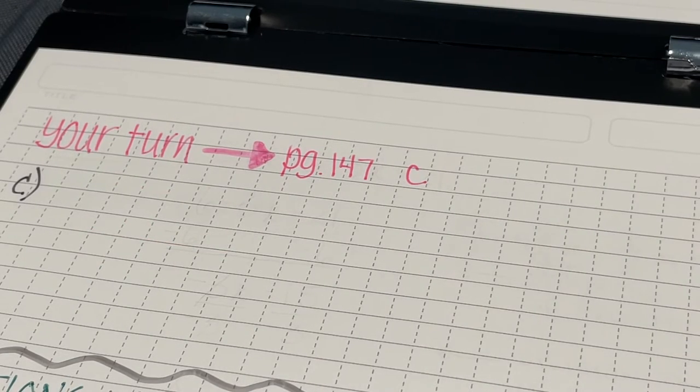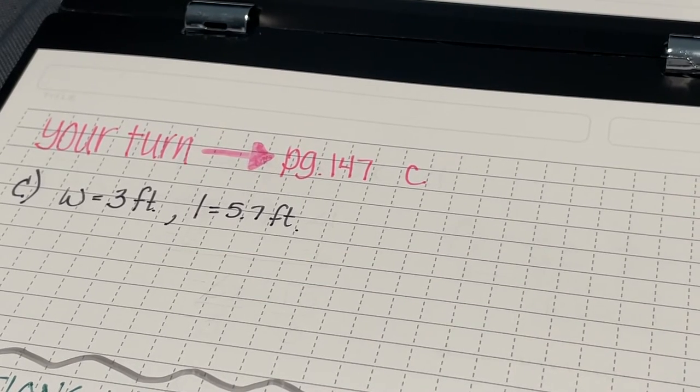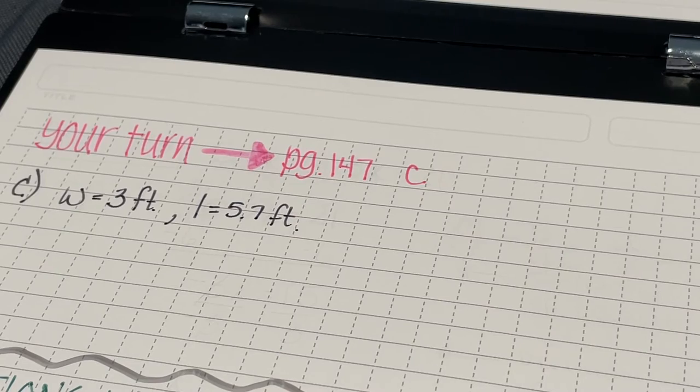Now, try page 147, problem C. Take some time to think about this problem. Come up with a possible solution. Make sure you press pause on this video, and then come back when you have a solution and see how you did. In problem C, the width is going to equal three feet, and the length is going to equal 5.7 feet.